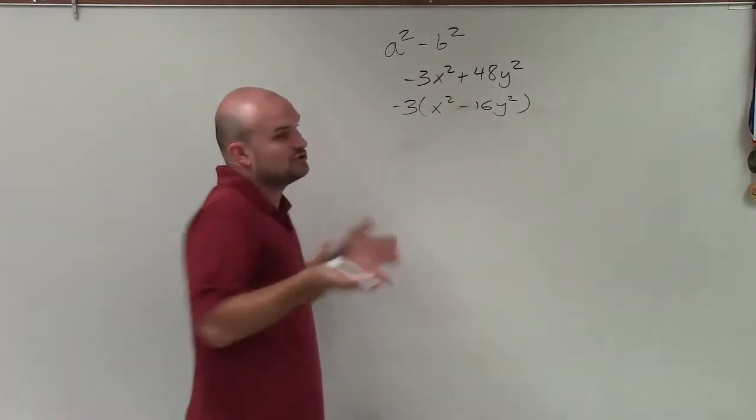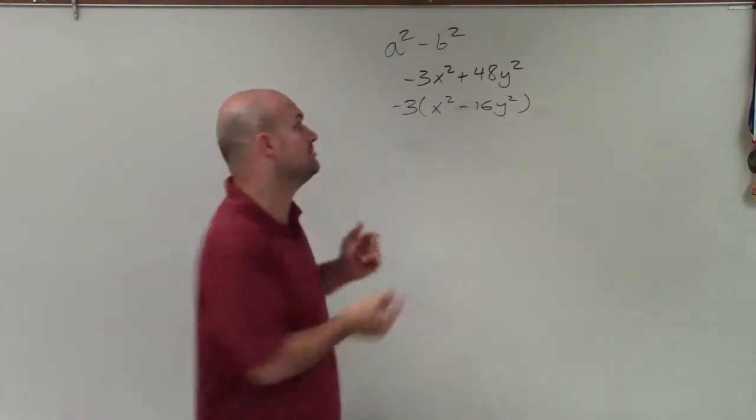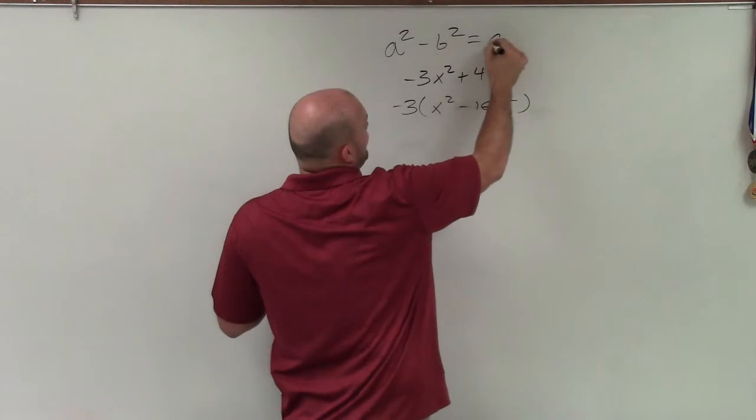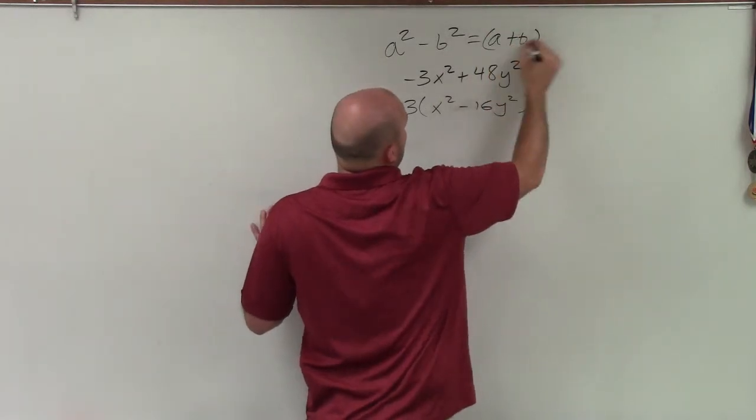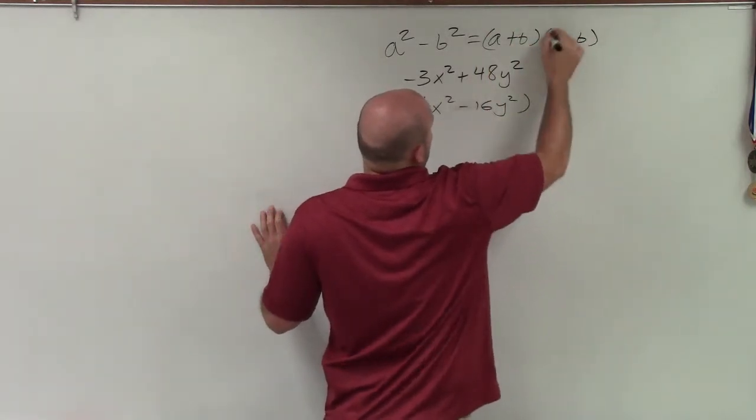So we need to know what a squared minus b squared. That is when we have a difference of two squares, a squared term minus another squared term. Well, when we have that, we can write it as a product of a plus b times a minus b.